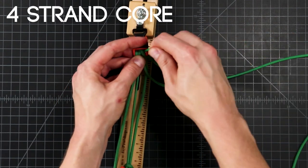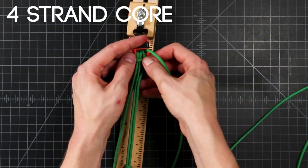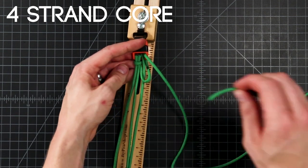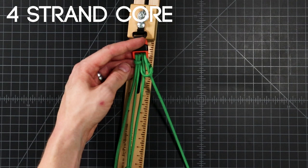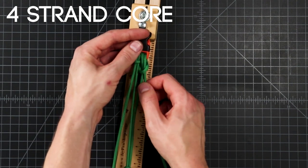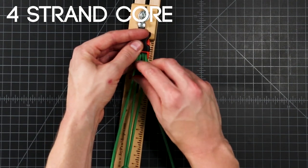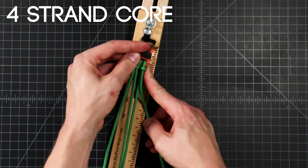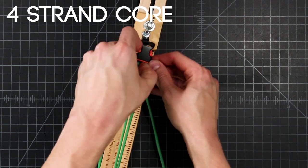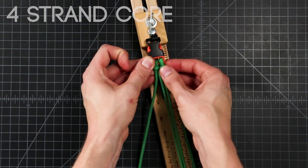At this point it's a little bit harder to pull through because you've got four cords. Leave a little bit of a loop there for us to feed our end through. Tighten that down and make sure your core strands are tight again.